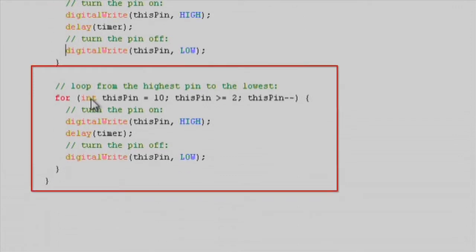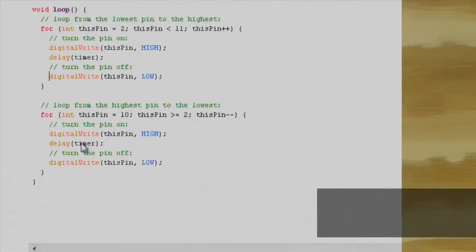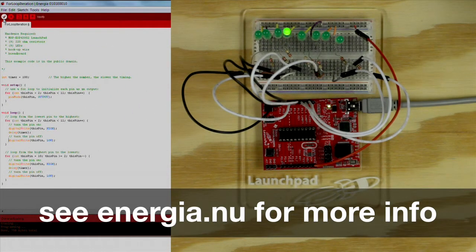In the second for loop, we turn the LEDs on and off in the reverse direction, starting from pin 10 to pin 2. That's it. Now just press the verify and download button and watch how the LEDs turn on and off as port values are changed.